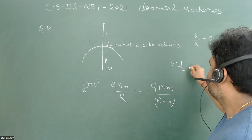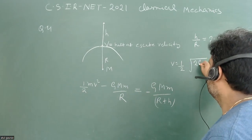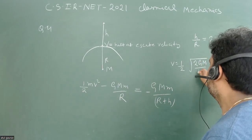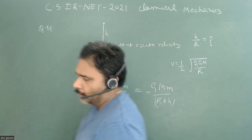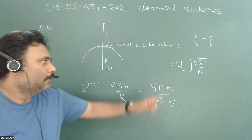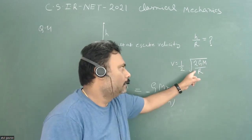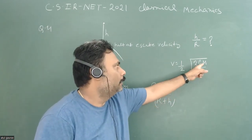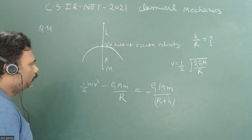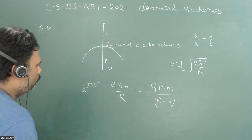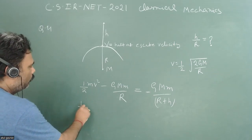So v = (1/2)√(2GM/R), since the escape velocity is √(2GM/R), where M is the mass of the Earth and R is the radius of the Earth. We now substitute this value into the energy equation.